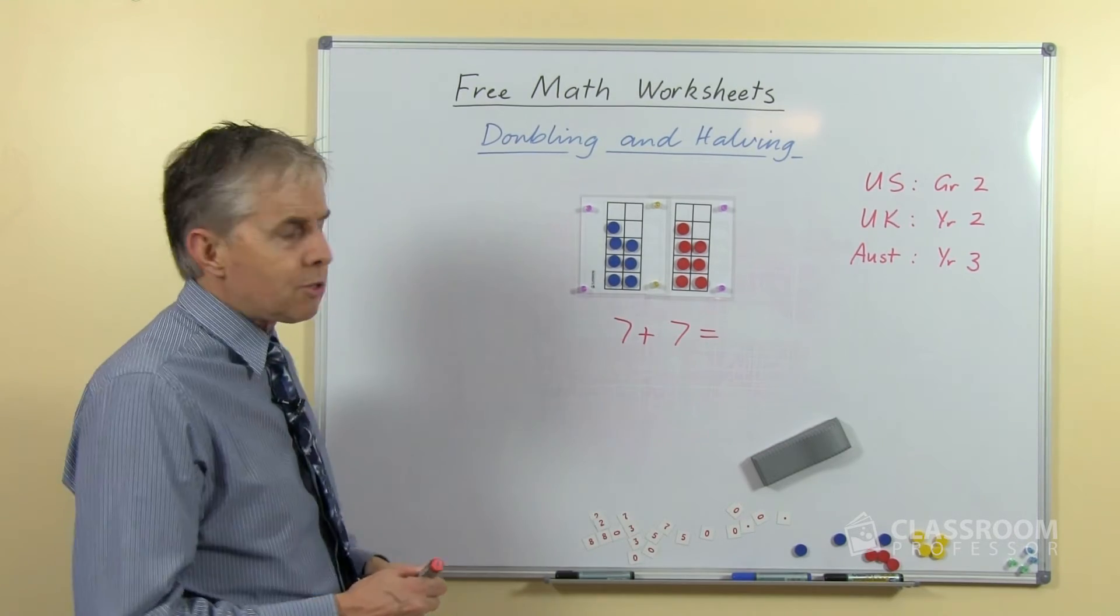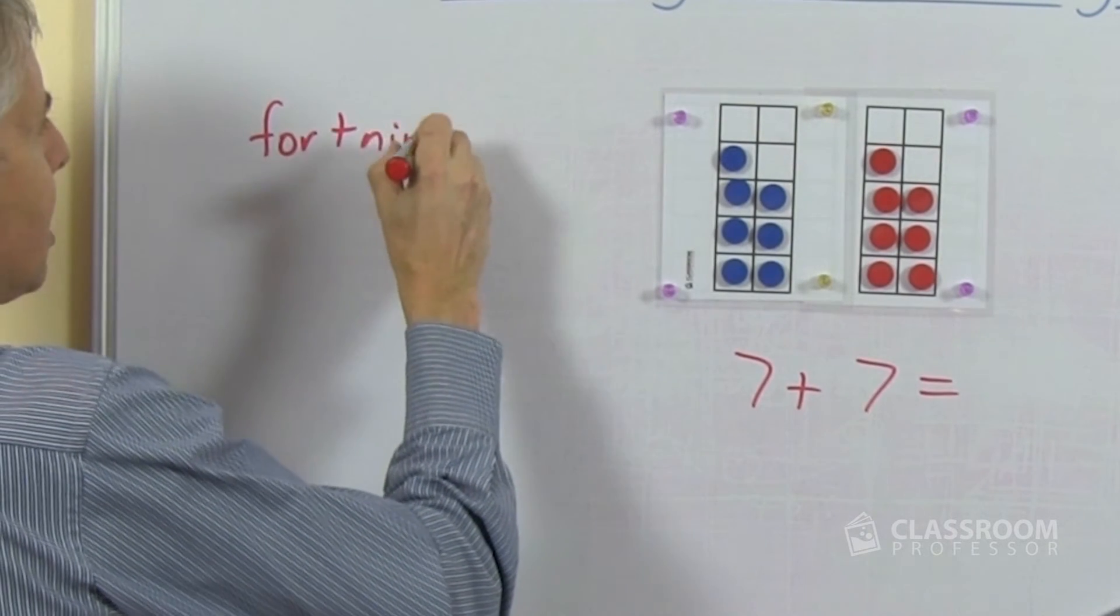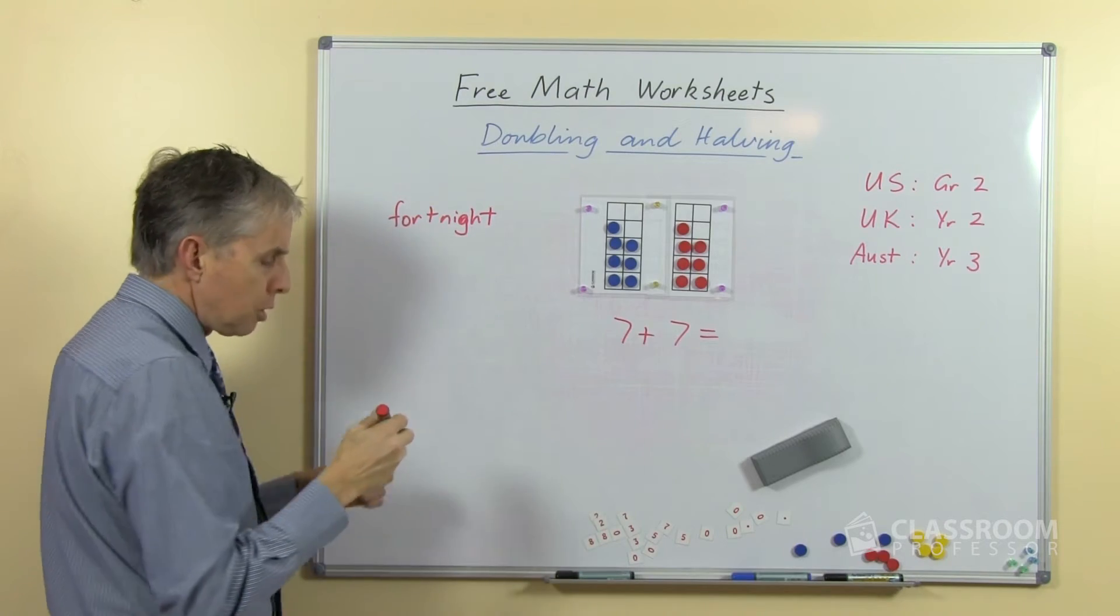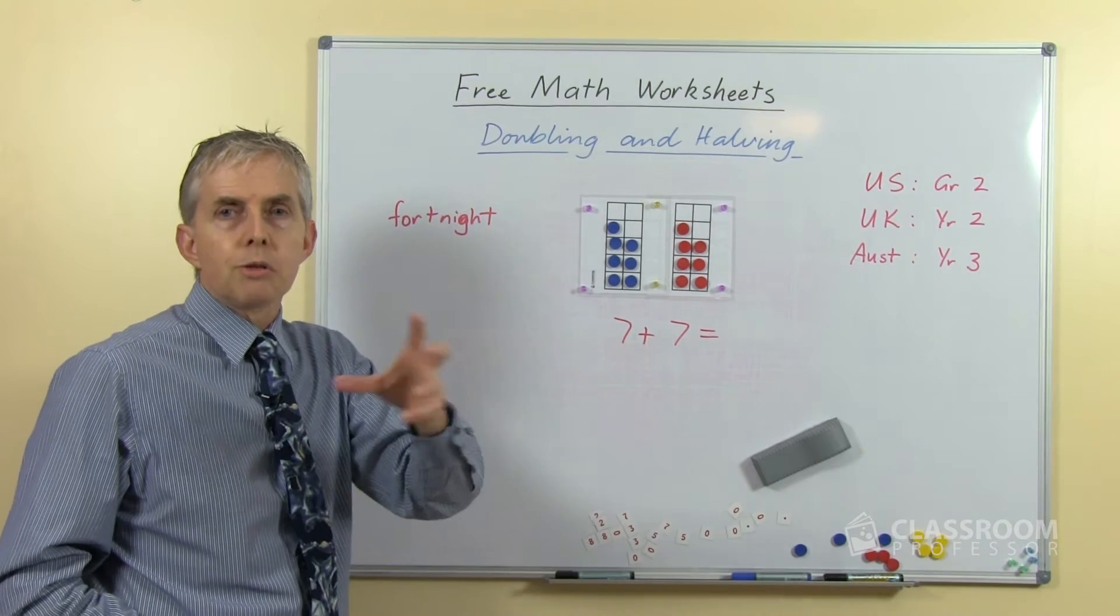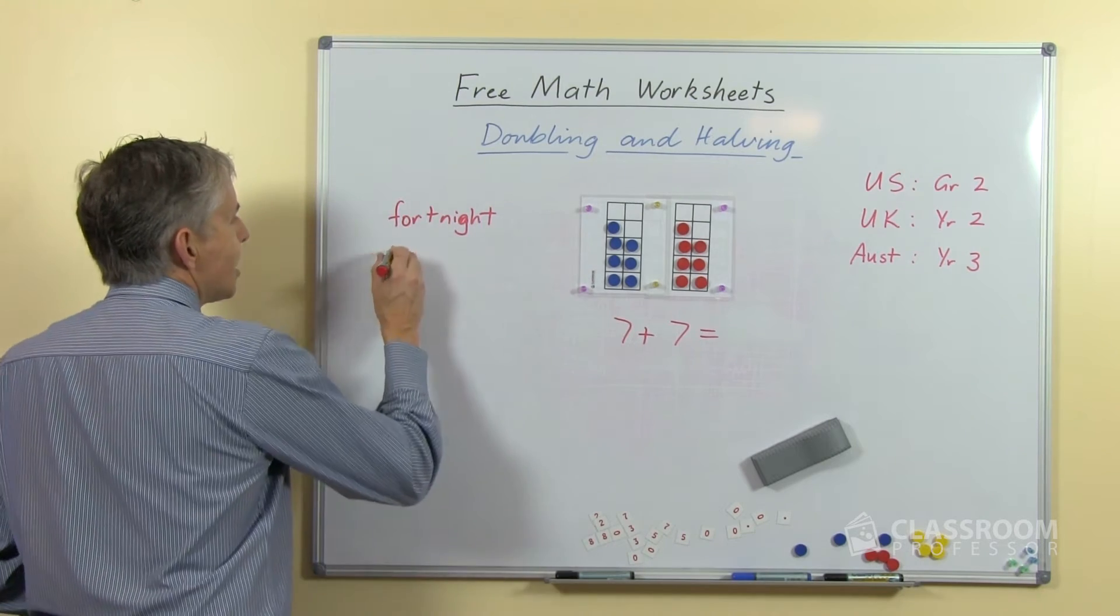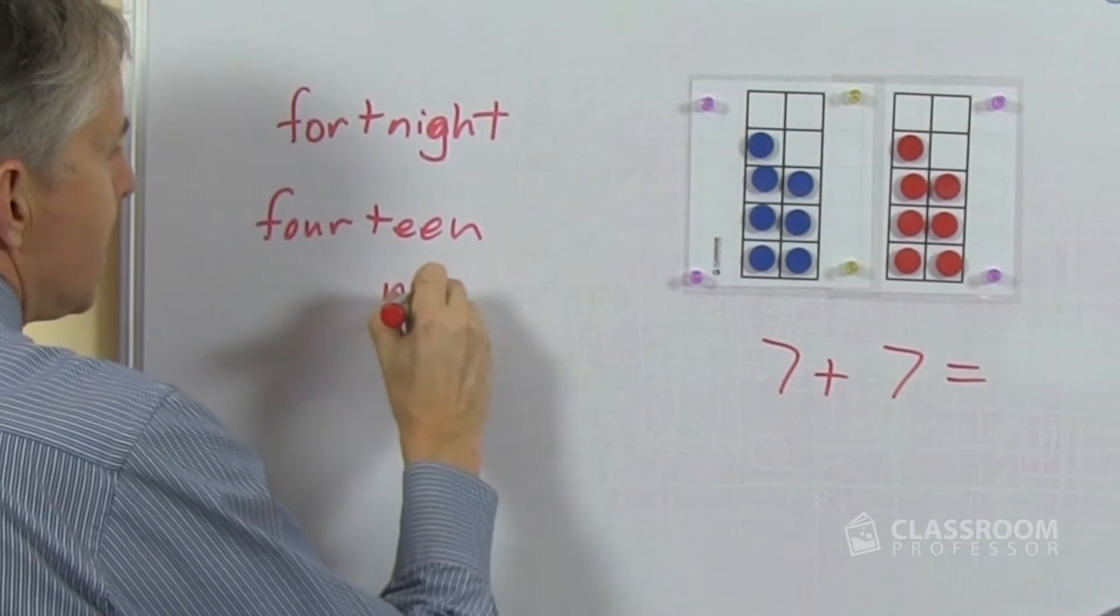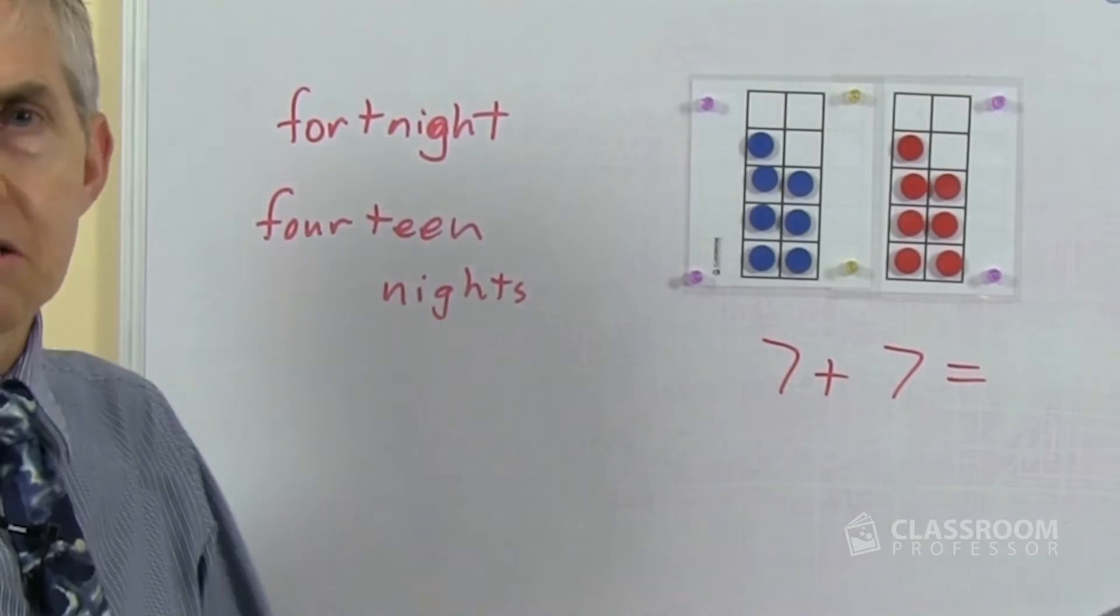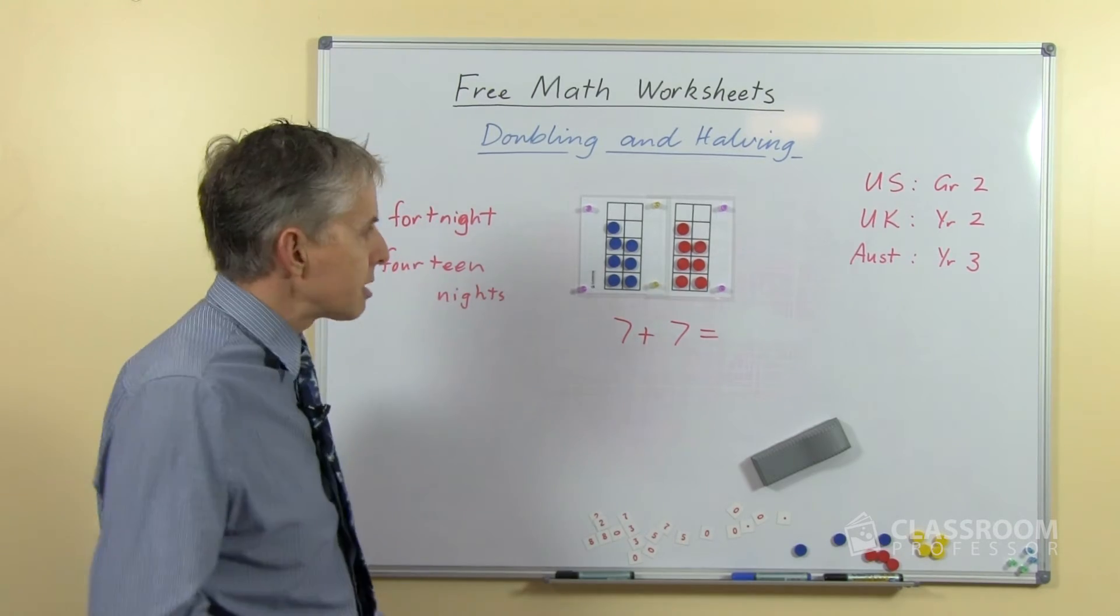For sevens interestingly enough there is another example and that is the word we use in many English speaking countries for two weeks. A week of course has seven days, two weeks has two lots of seven days or seven plus seven or double seven and we call it a fortnight, which just happens to be a little bit similar to the word fourteen and the word night. So a fortnight is fourteen nights, so there's a nice cultural slash historical connection that will work as well.